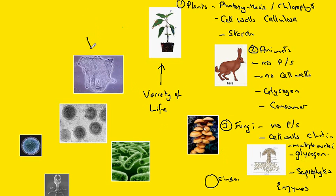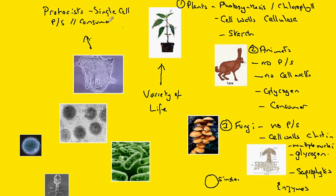Up here we have a group called protoctists, which are single-celled. Some of them photosynthesize, others are consumers. Notice the presence in this diagram of a full nucleus. Contrast that — so that is group number four.